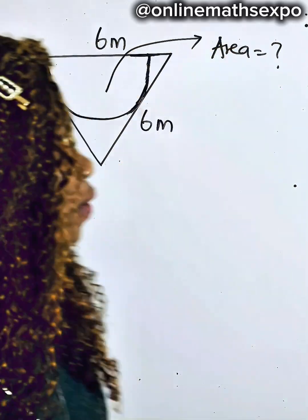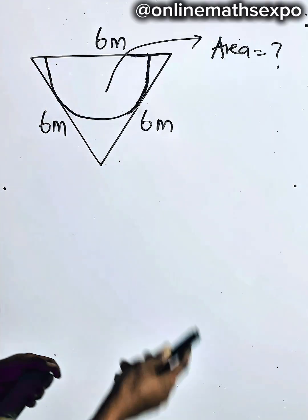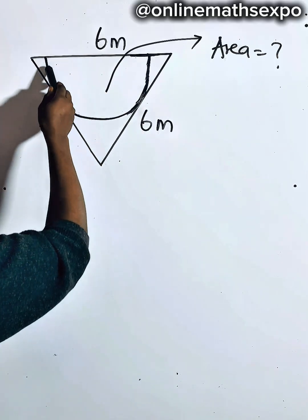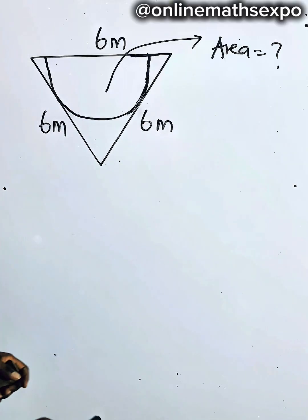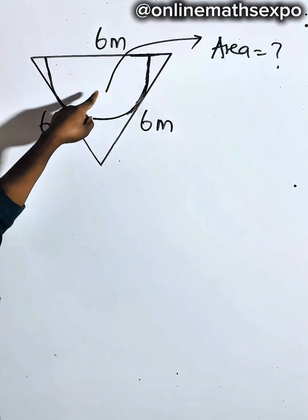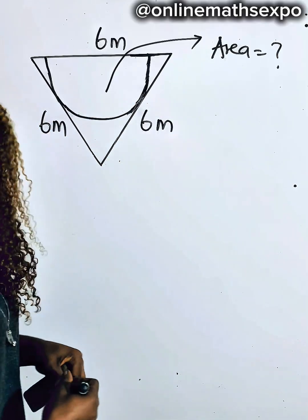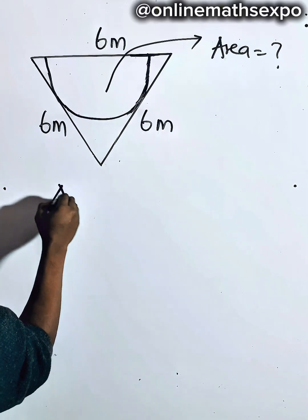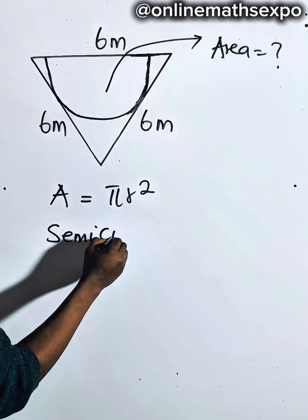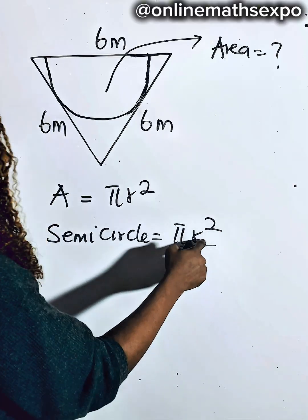Welcome to my channel. In this tutorial we are given a triangle, and inside this triangle is inscribed a semicircle such that the diameter of the semicircle is touching one side of the triangle, and the arc of the semicircle is also touching another side of the triangle. The triangle measures 6 meters for each side, and the question is asking us to find the area of this semicircle. The area of a semicircle is just half the area of a full circle, so it is pi r squared divided by 2. The key question is: how do we find the radius?